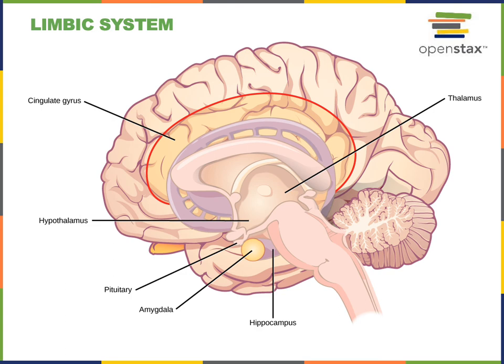The limbic system is a functional network of brain structures that are involved in establishing emotional states and behavioral drives, and regulating memory storage and retrieval. The regions of the diencephalon that are involved in the limbic system include nuclei of the thalamus as well as nuclei of the hypothalamus.